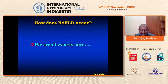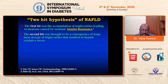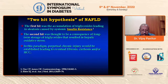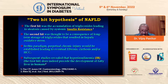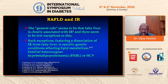How does NAFLD really occur? We aren't exactly sure, but a two-hit hypothesis exists. The first hit is the accumulation of triglycerides in the liver leading to steatosis, caused by systemic insulin resistance. The second hit is thought to be a consequence of long-term storage of triglycerides resulting in hepatic oxidative stress and damage to the hepatocyte, eventually leading to fibrosis, cirrhosis, or hepatocellular carcinoma. Subsequent studies have revealed that hyperinsulinemia — that is, insulin resistance — does indeed precede the development of fatty liver in diabetics. To the extent that if you see a fatty liver in a non-diabetic, you could assume that he is a pre-diabetic.